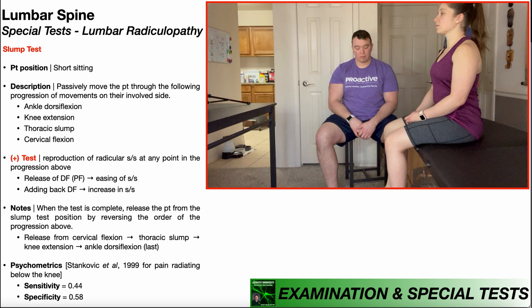In this video, we're going to be discussing another special test used in the assessment of a lumbar radiculopathy, and that is the slump test. Notice that the psychometrics of the slump test are very poor — a sensitivity of only 44% and a specificity of 58%. As a standalone test, you should never use the slump test to either rule out or rule in a lumbar radiculopathy because alone it has weak clinical value.